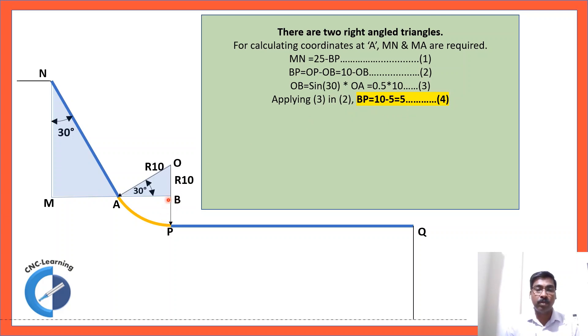sin 30, value of sin 30 is 0.5. Now, when you apply this value of OB in this formula, then you get 10 minus 5 equals 5. So, now you got this BP. Now, this BP when you apply in this, to calculate MN,